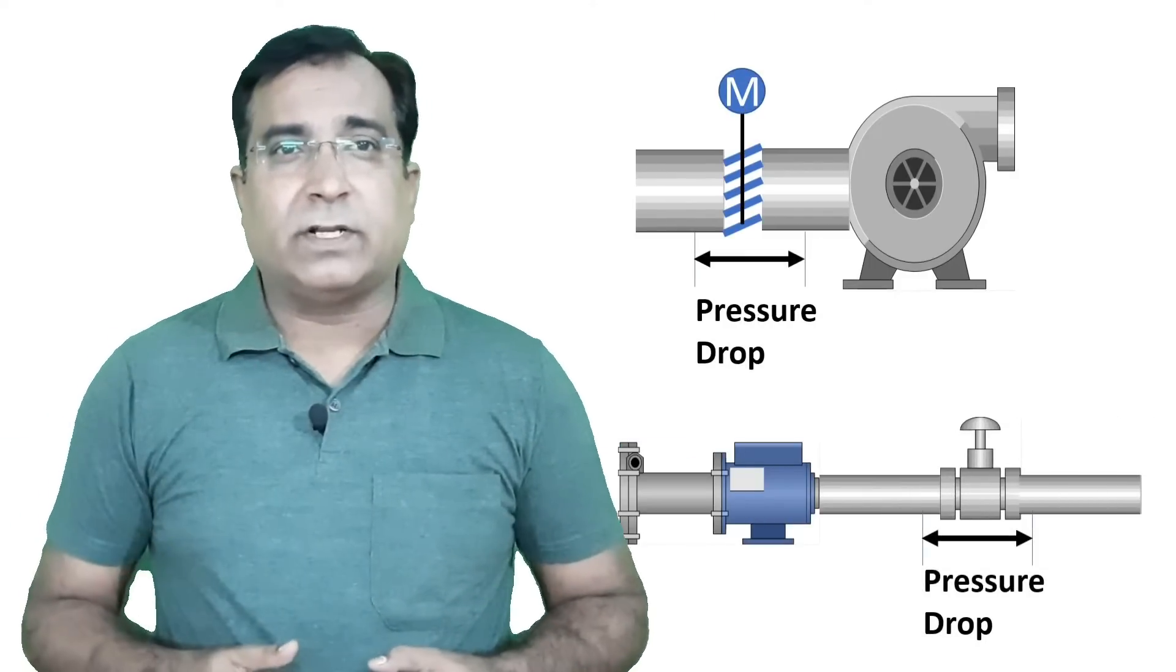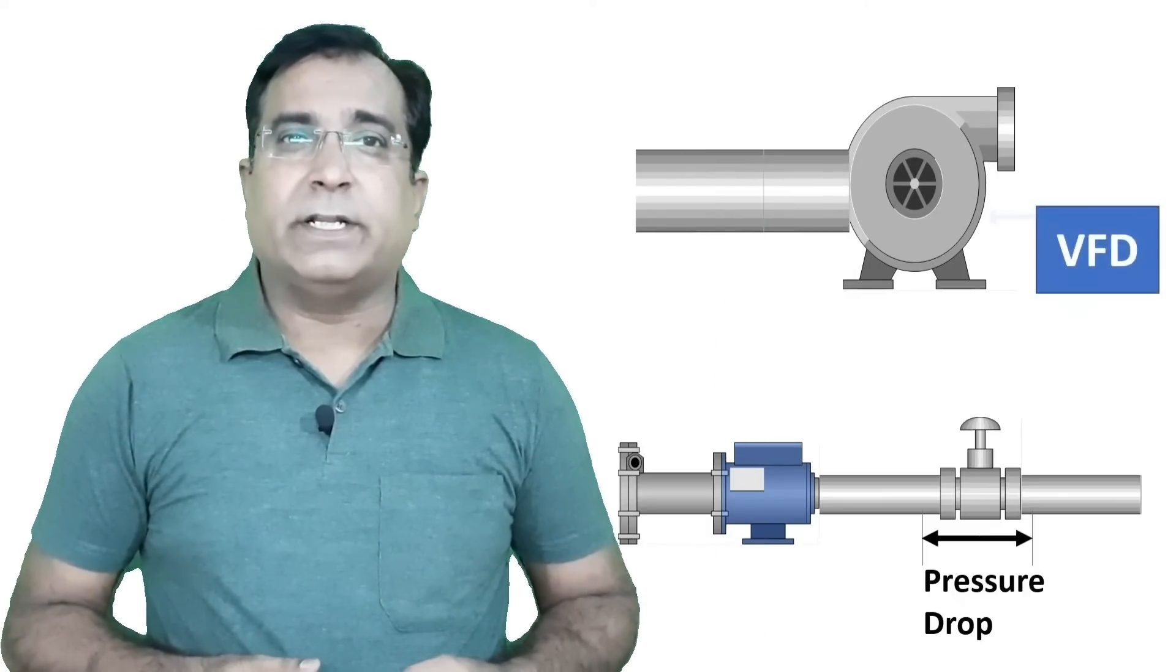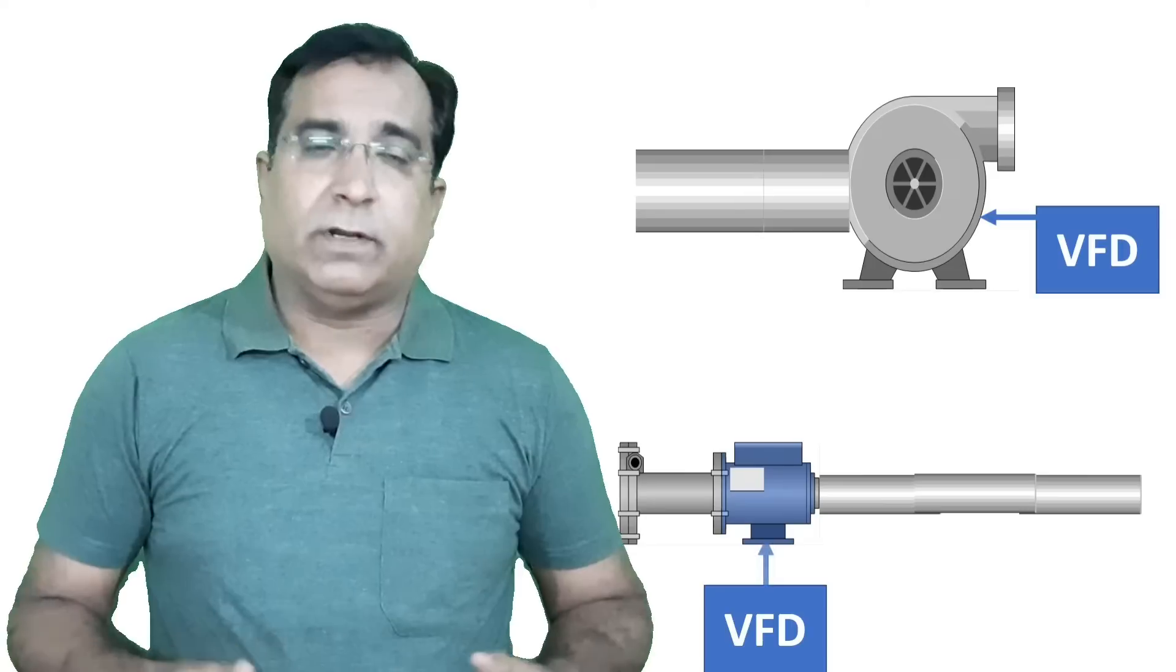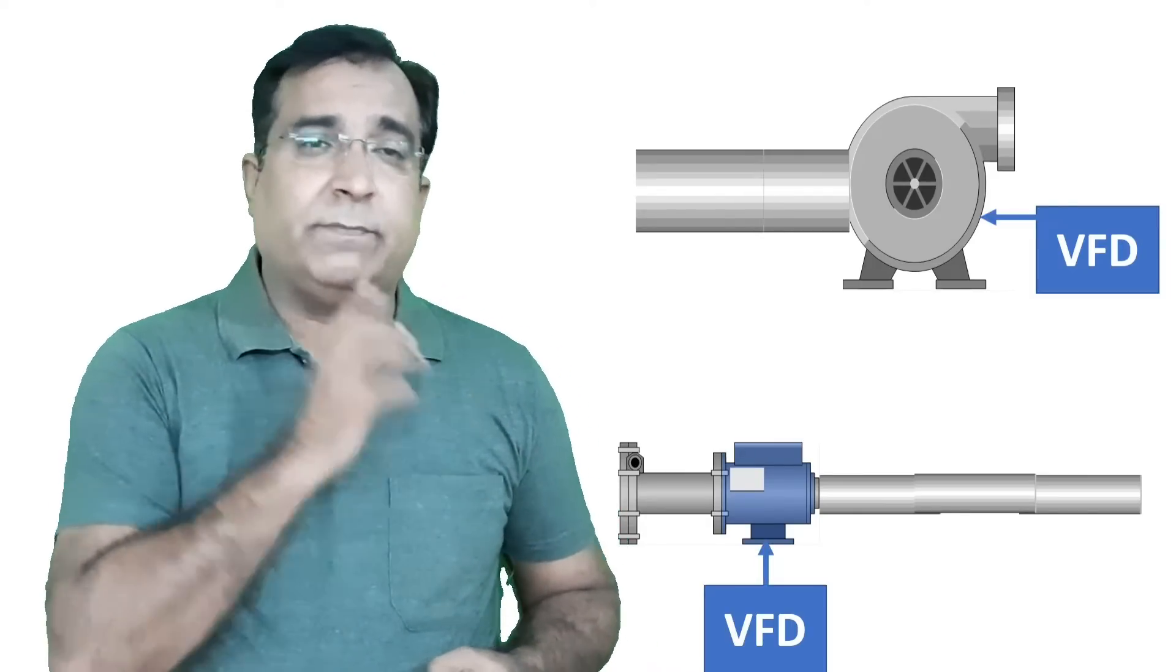Better if these damper and valves are removed and flow is regulated by directly regulating the speed of a fan or pump or blower. A considerable power can be saved, which earlier was being wasted as a pressure drop.